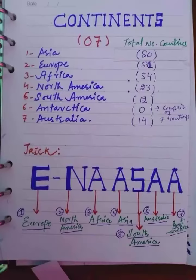We are going to discuss the continents of the world — how many continents there are and their names. There are seven continents. Number one: Asia, which contains 50 countries.